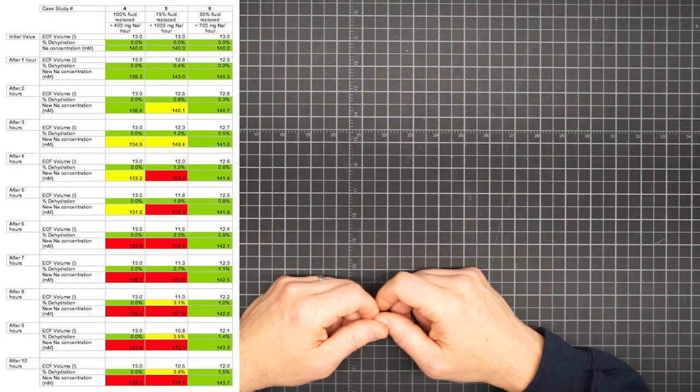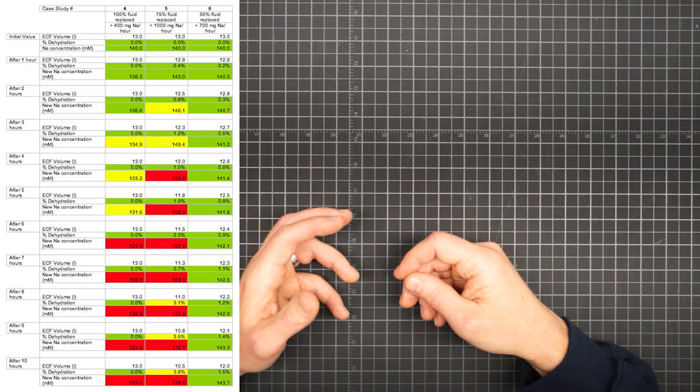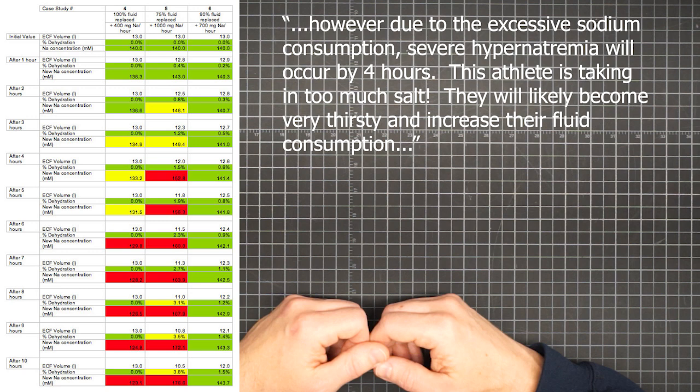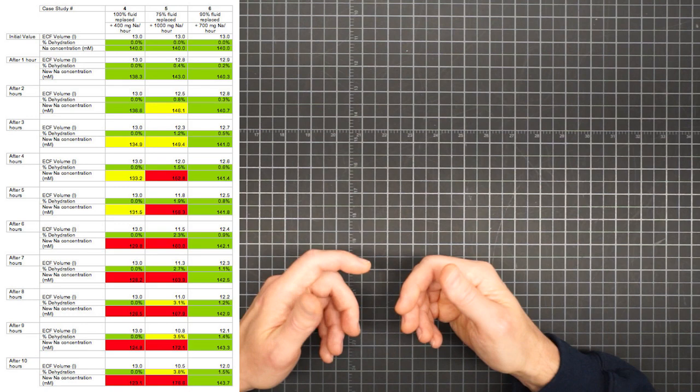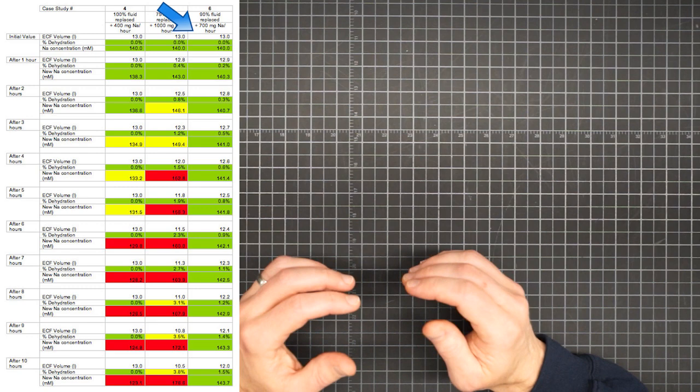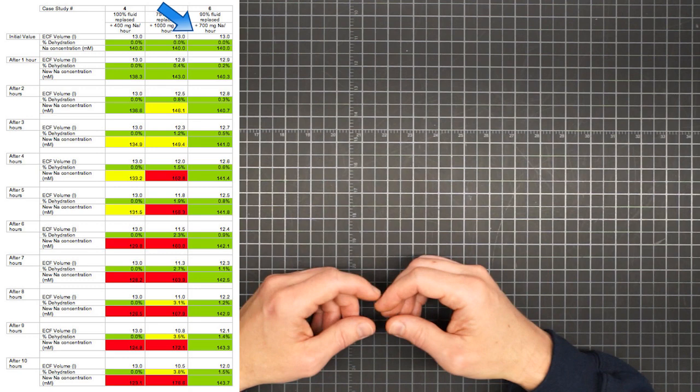However, due to the excessive sodium consumption, severe hypernatremia will occur by four hours. This athlete is taking in too much salt. They will likely become very thirsty and increase their fluid consumption. And lastly, there's timeline number six, where 90% of water and 700mg per hour or 76% of sodium is replaced. This allows the athlete to keep everything in the green for the full 10 hours, and it didn't take perfect 100% replacement scheme to do it. As I suggested in the part three video regarding dehydration levels, it's not only about avoiding death or a serious medical condition, it's about feeling healthy and doing well. As Dr. Toker puts it, this athlete will be the most likely to perform and not just survive.